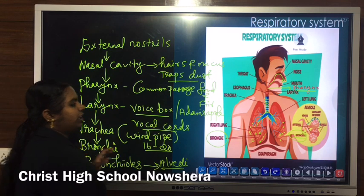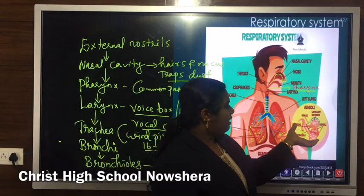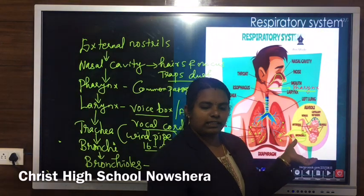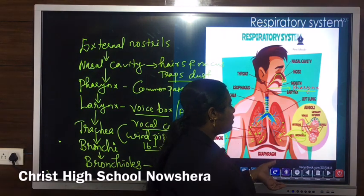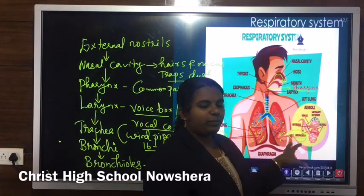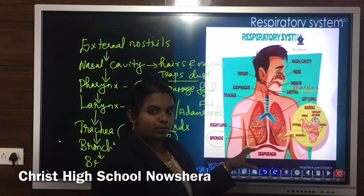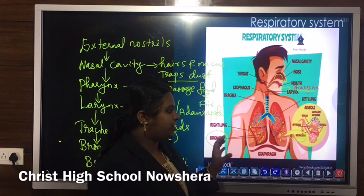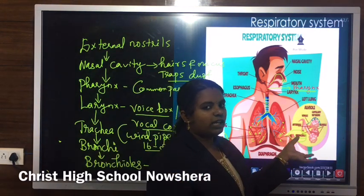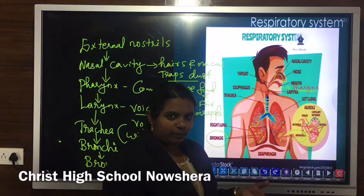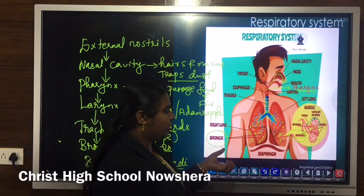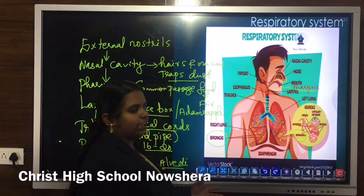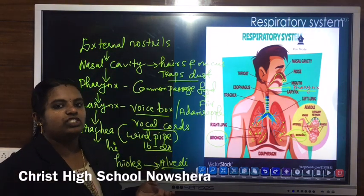The main function of alveoli: alveoli are richly supplied with blood capillaries, increasing the maximum surface area for the exchange of gas. The main site of gas exchange is the alveoli. Around 300 million alveoli or air sacs are present in each lung, which greatly increases the surface area for maximum gas exchange.